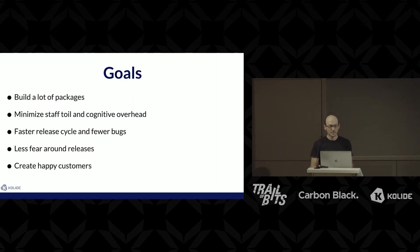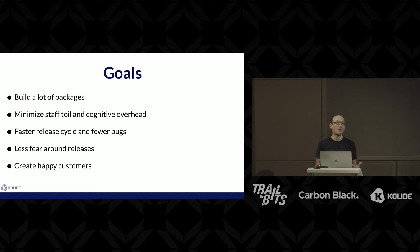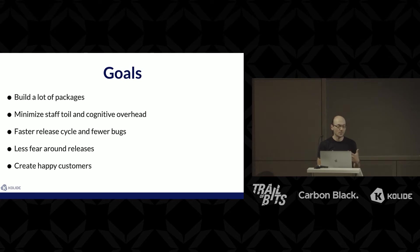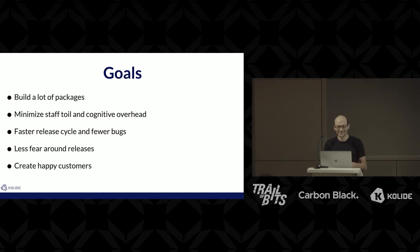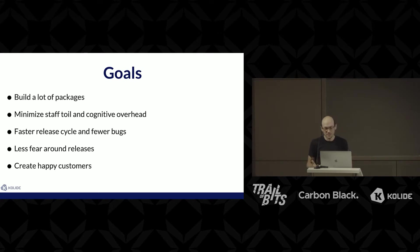So what are our goals? My goals are to build a lot of packages and to minimize my own toil — cut down my cognitive overhead. It's very hard to remember what got built when, and what special requests happened. I want a faster release cycle and fewer bugs. The more quickly we can iterate, the fewer bugs we have. I don't want to be fearful of releases — I don't want to ship something broken to the world. And I want our customers to be happy, to have a great experience downloading an application, running it, and having it be great.